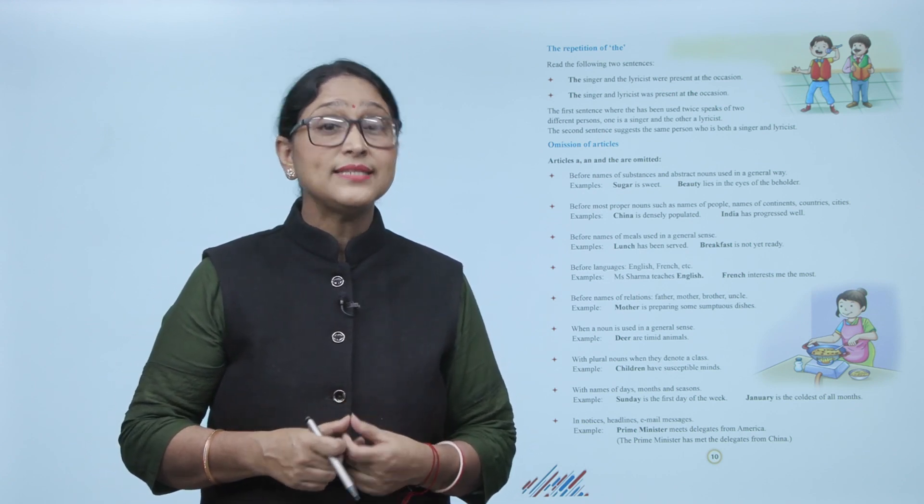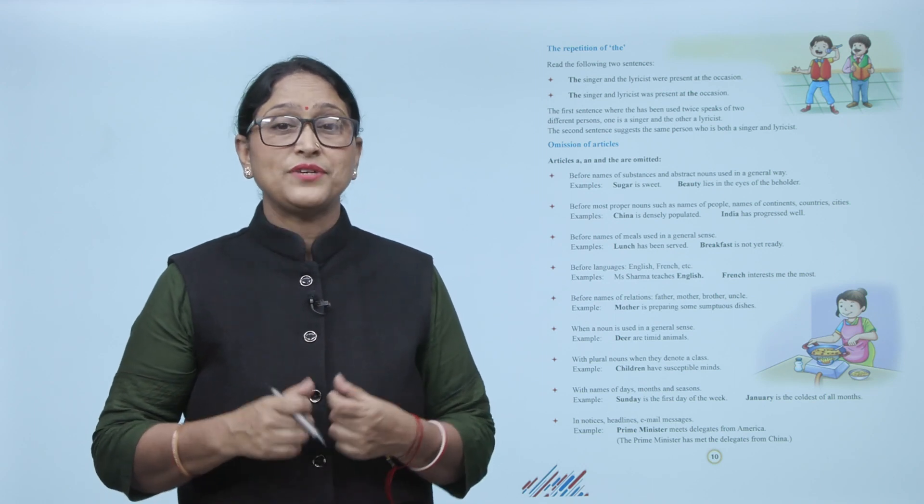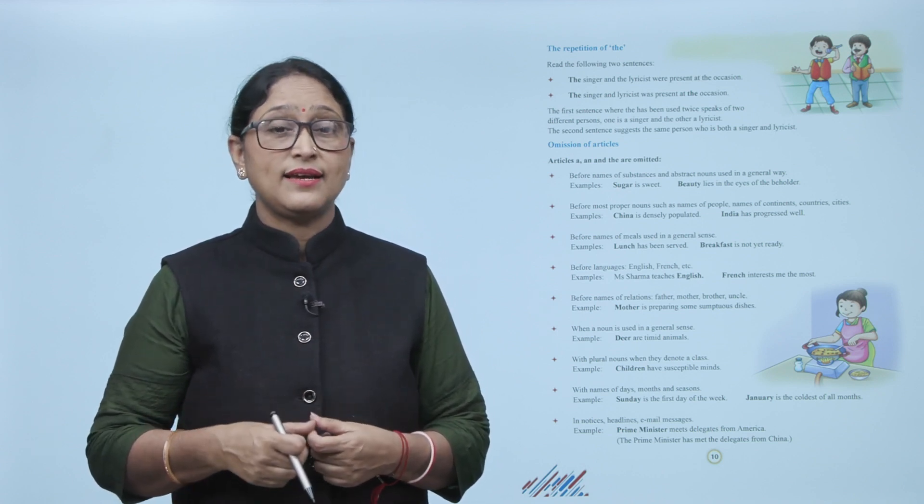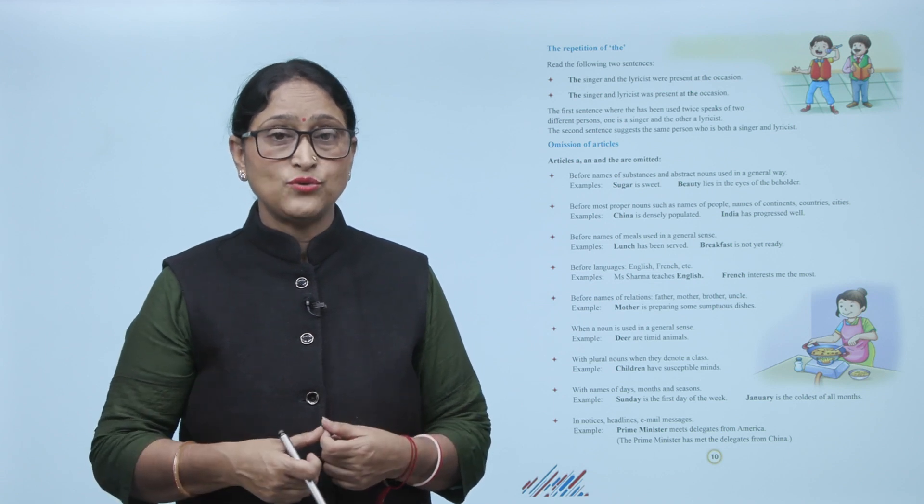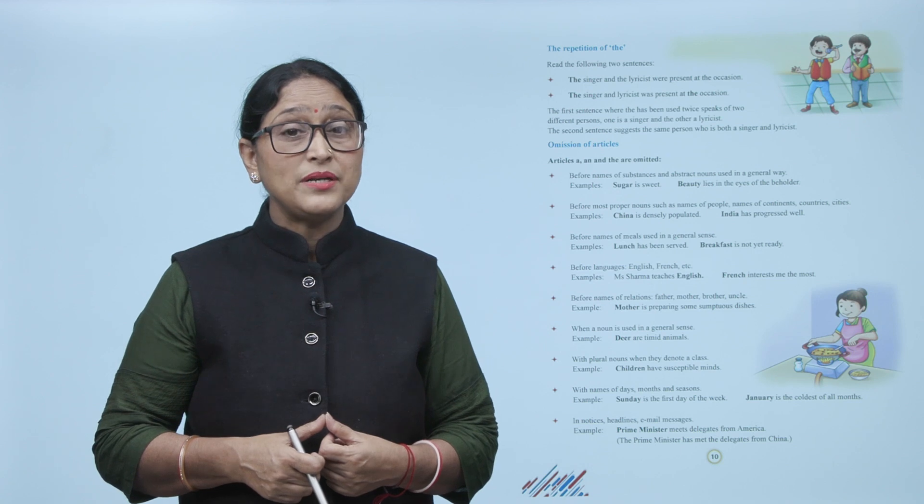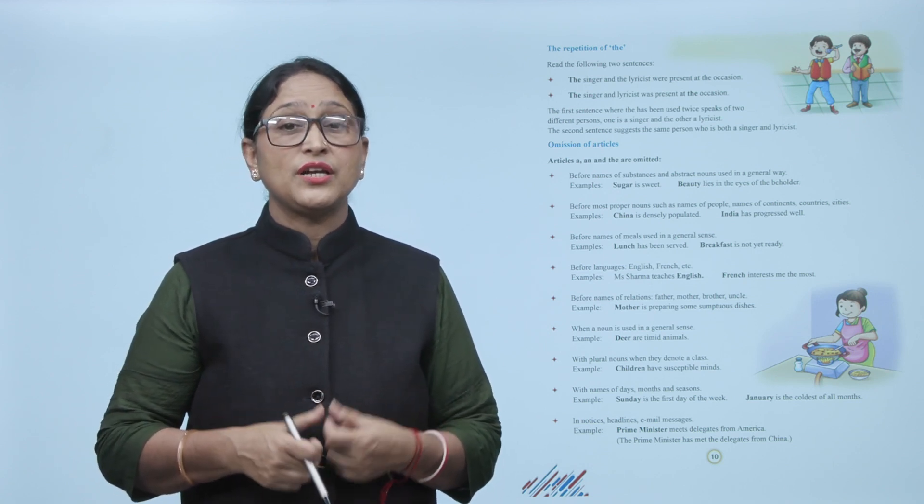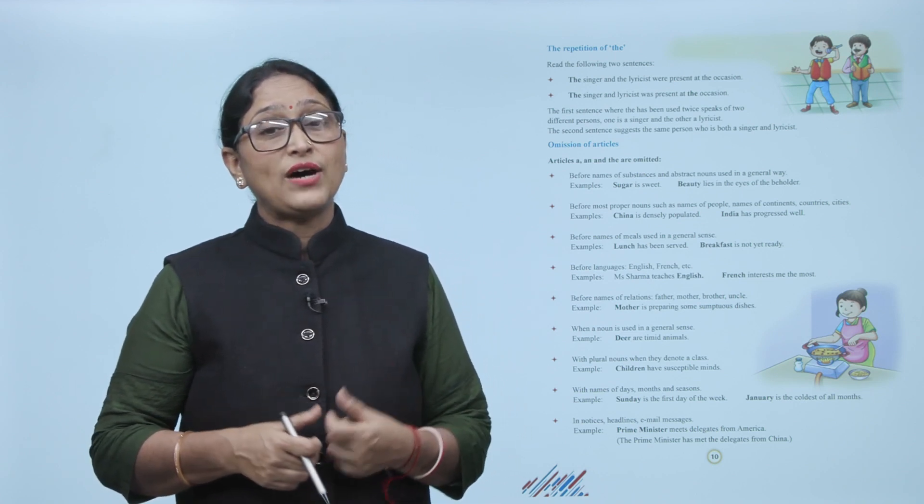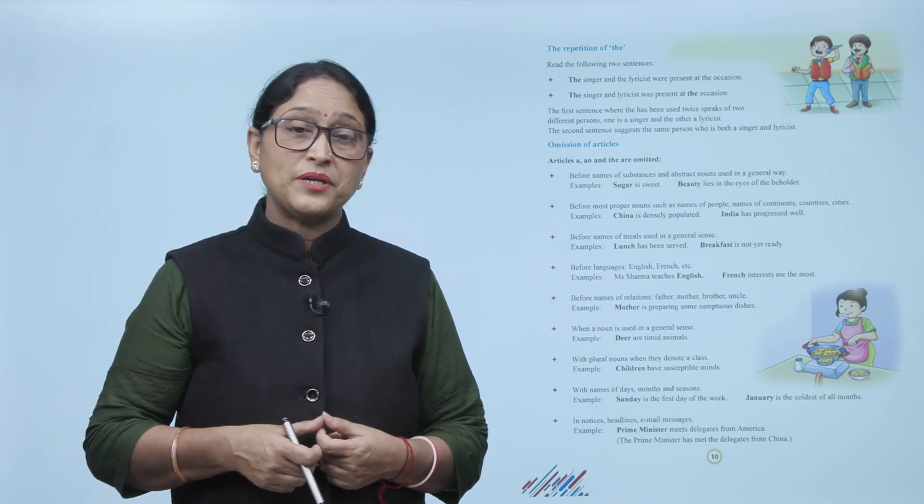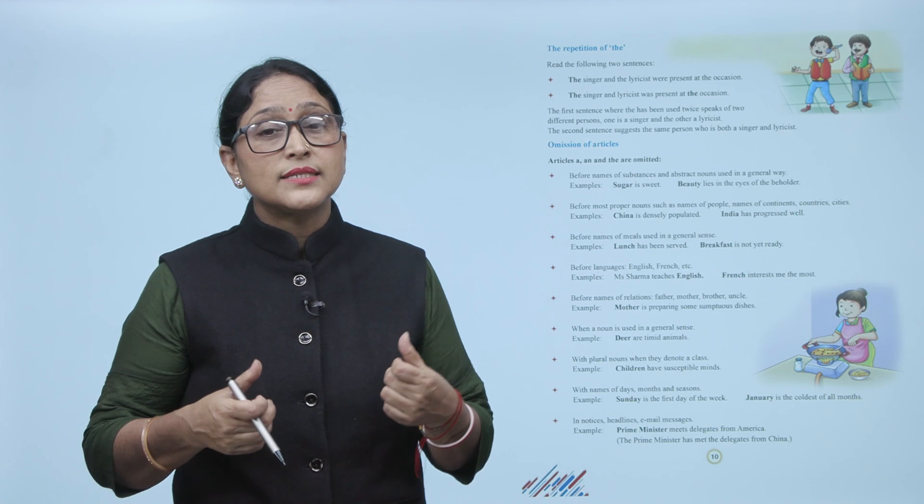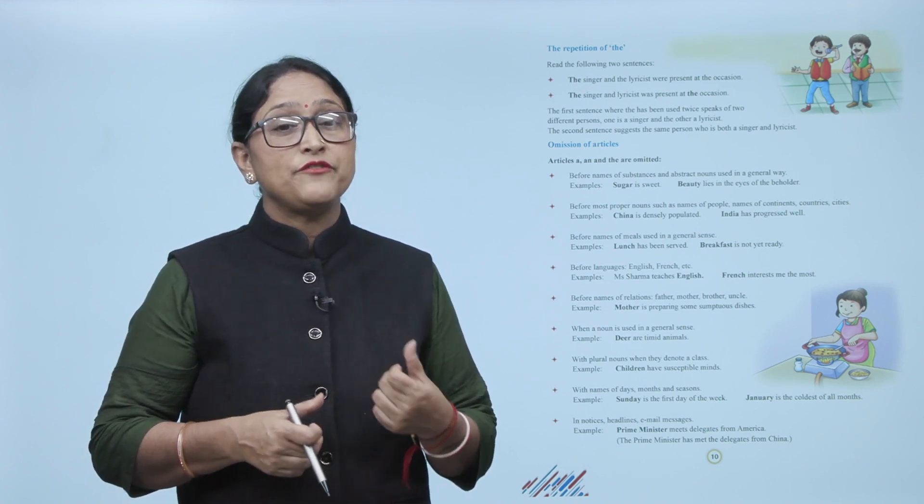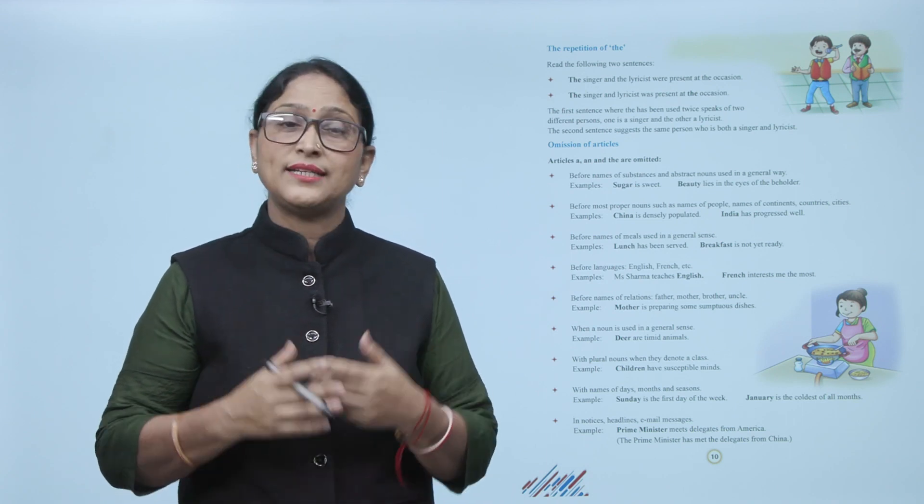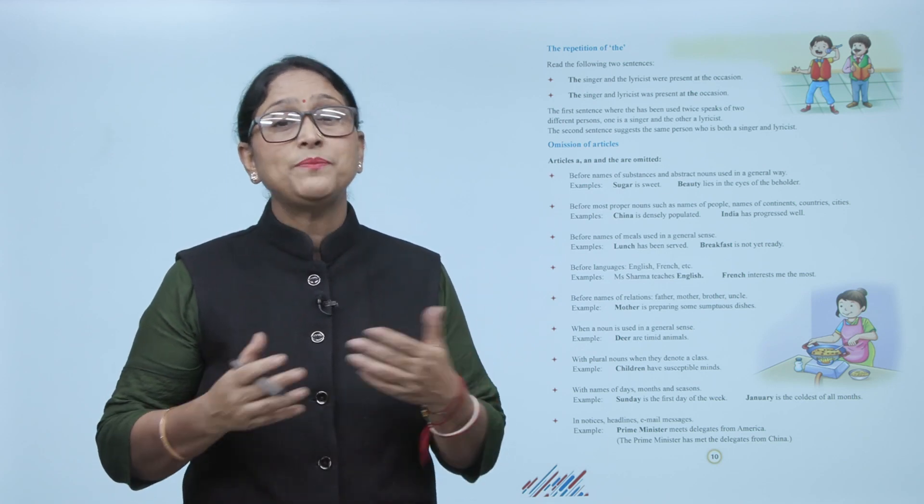Before languages: English, French, etc. Example: Mr. Sharma teaches English. French interests me the most. Before names of relations: father, mother, brother, uncle. Example: mother is preparing some sumptuous dishes. When a noun is used in a general sense. Example: children have susceptible minds. With names of days, months, and seasons. Example: Sunday is the first day of the week. January is the coldest of all months.